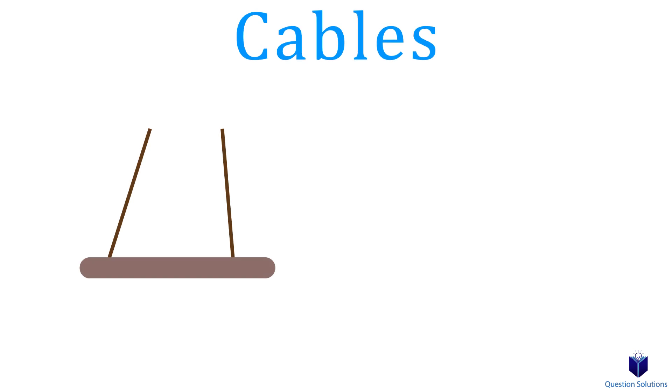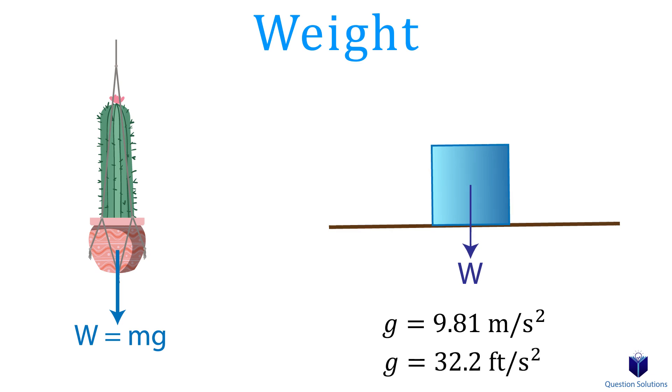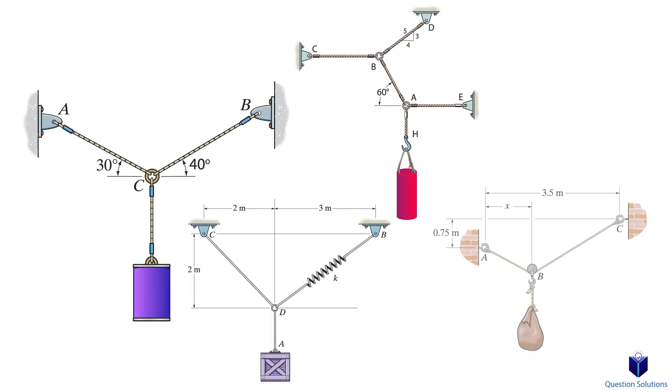Next, we need to discuss cables. A cable can only support a tension or a pulling force. Remember, you can't push on a rope. This force will always act in the direction of the cable. If we have a cable going through a pulley, the tension throughout the whole cable will be the same. Lastly, objects have a weight, and that's simply the mass of the object times the acceleration due to gravity, which is 9.81 meters per second squared or 32.2 feet per second squared. Weight is always straight down even if an object is on an inclined plane.